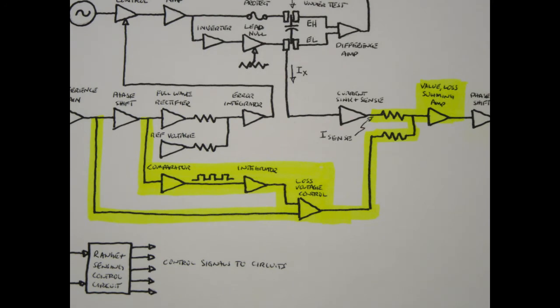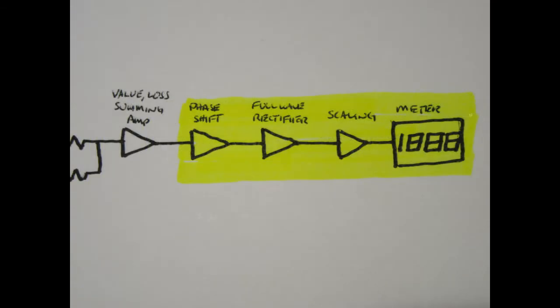The meter circuit includes a subsection that taps off the excitation voltage and shifts it by 90 degrees in phase, referred to in the diagram as the loss voltage control signal, and then sums it with the value and loss summing amplifier with the I-sense signal coming from the current-sense amplifier, thus cancelling the non-reactive part of the measured impedance signal, and leaving only the reactive signal that represents the capacitance being measured. The resulting signal passes through additional stages to rectify the AC signal to a DC signal, and scale it to a range that the actual meter is able to display.